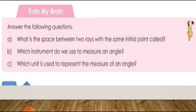Now the next question: which unit is used to represent the measure of an angle? The answer is degree — D-E-G-R-E-E. You can show the degree as a small zero above the number. That is degree.